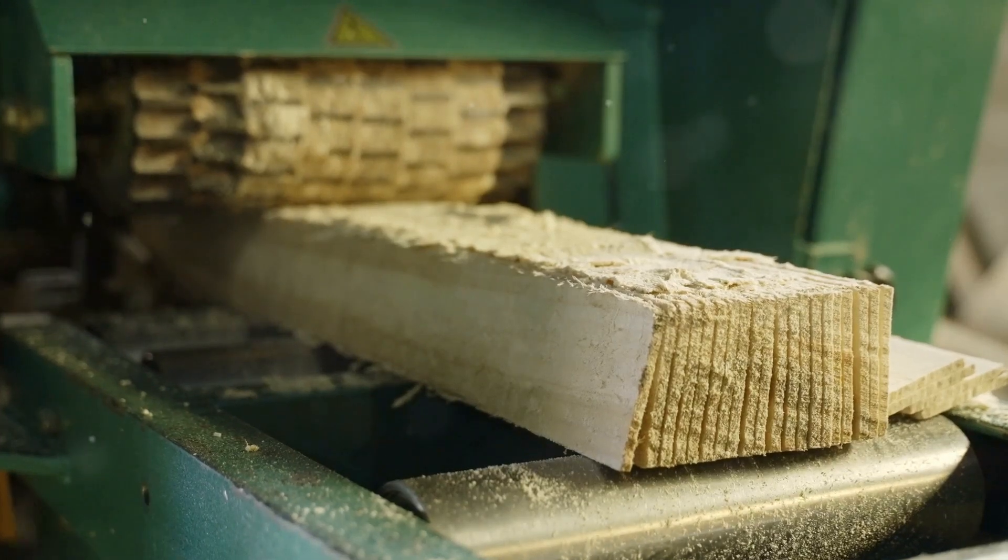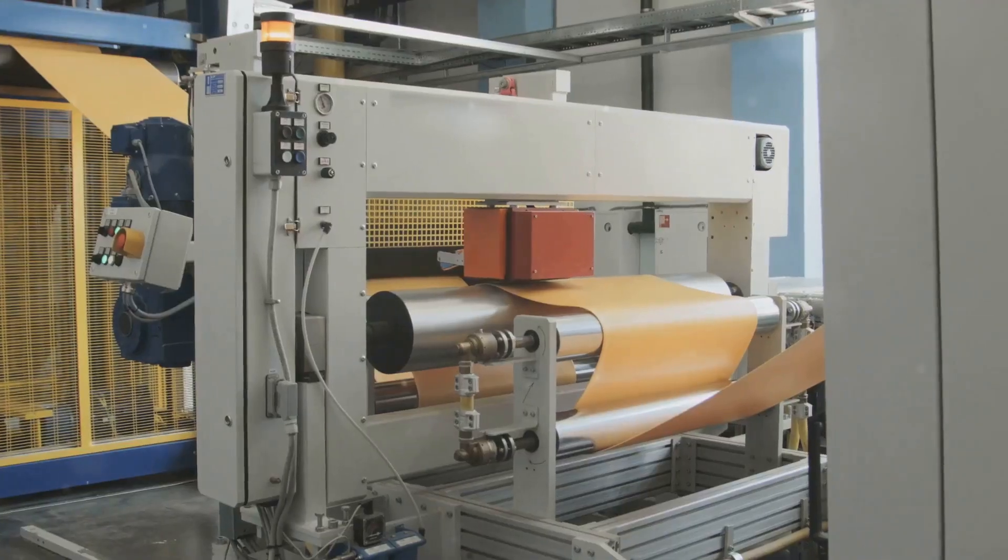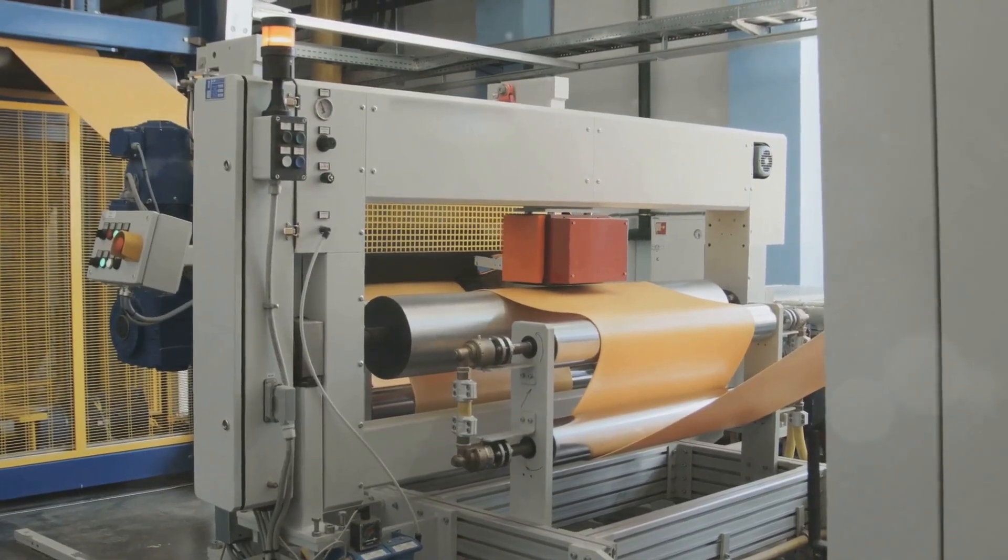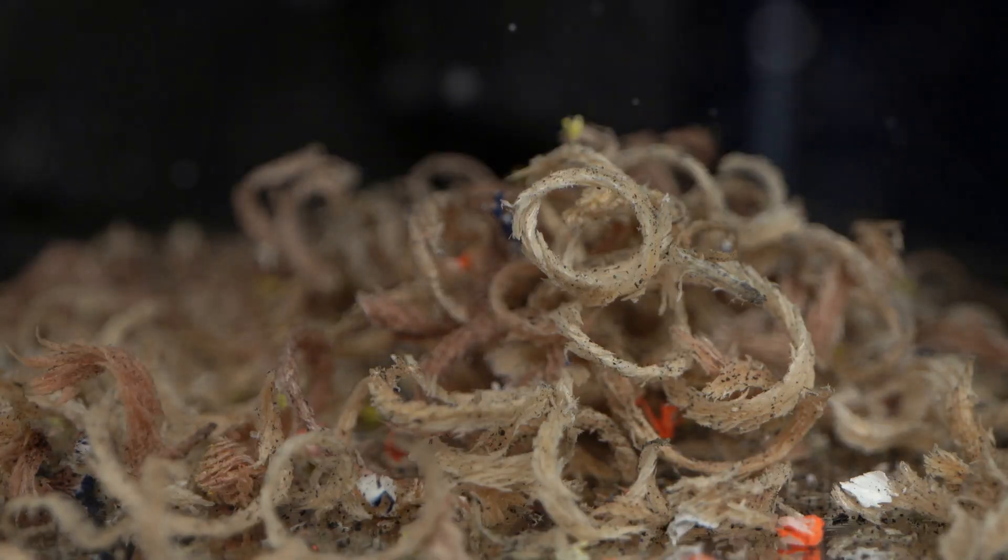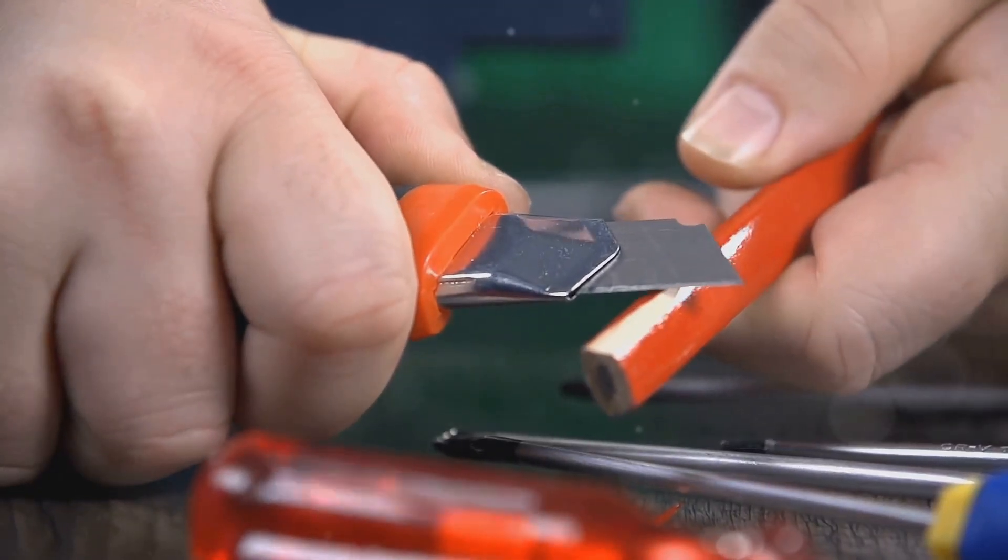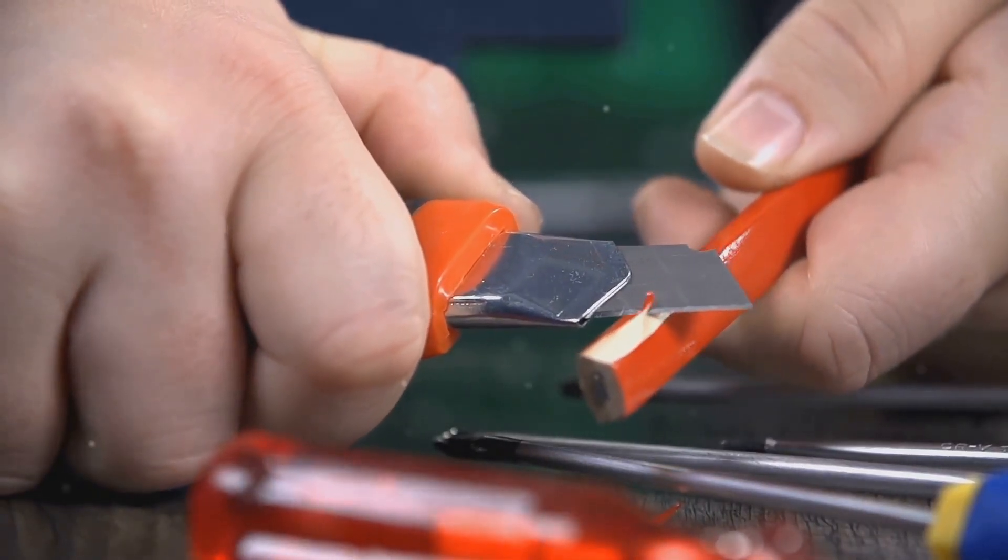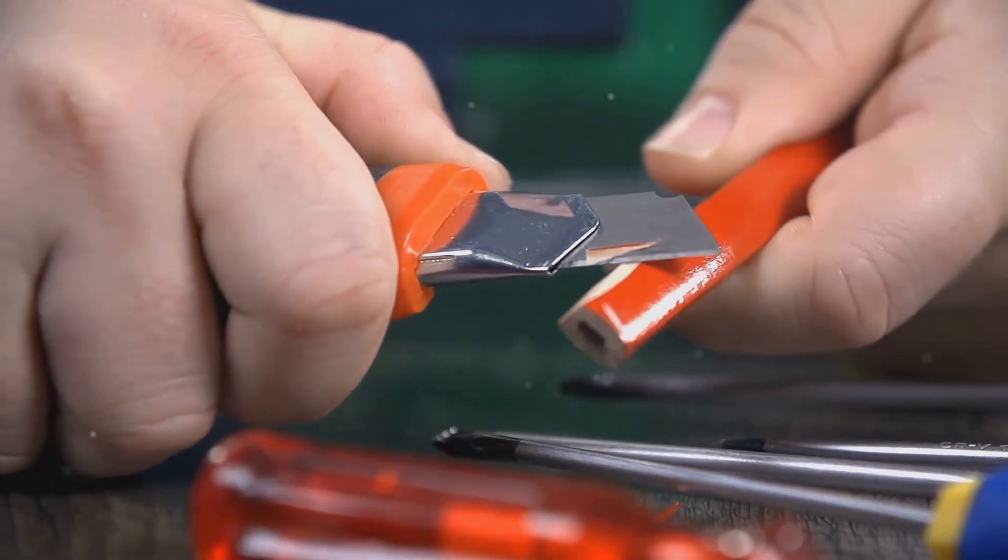Shaping the lead. The process of transforming the graphite clay paste into slender pencil leads is a marvel of precision engineering. The paste is first extruded through a die, a metal plate with tiny holes. As the paste is forced through these holes, it emerges as long thin strands. These strands, still soft and pliable, are then cut to the desired length, ready to be transformed into the familiar pencil leads.